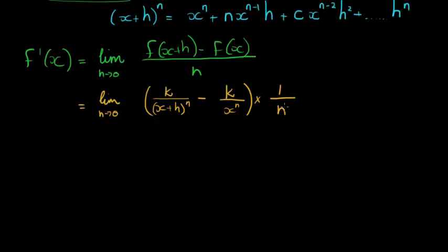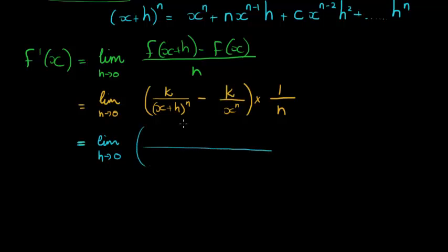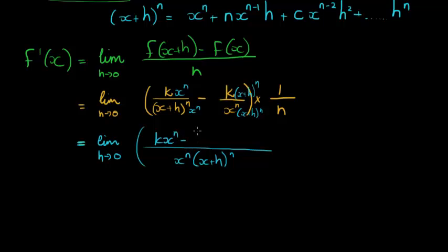To cancel the h, we first need to combine the two fractions into one term by finding a common denominator. The common denominator is x to the power of n times (x+h) to the power of n. Multiplying accordingly, the numerator becomes k times x to the power of n minus k times (x+h) to the power of n, all multiplied by 1 over h.